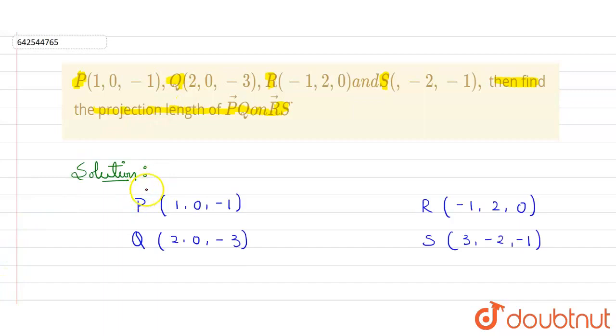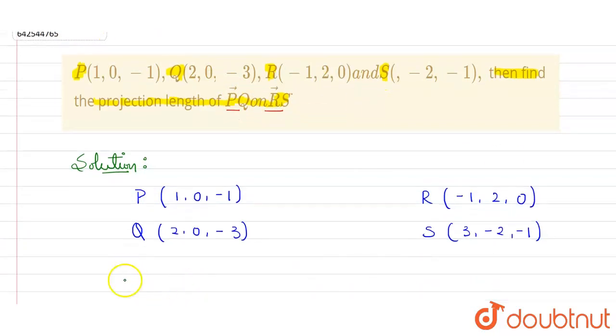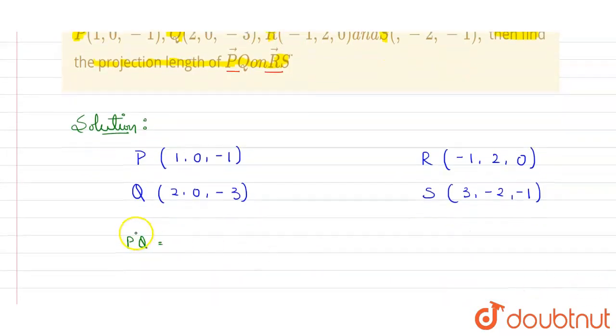These are the 4 points given to us in the question and we have to find the projection length of PQ on RS. First we need to find the vector PQ and RS. My vector PQ will be, we know that how to find a vector. Position vector of Q